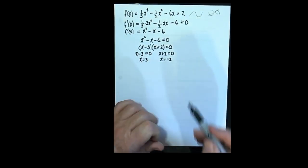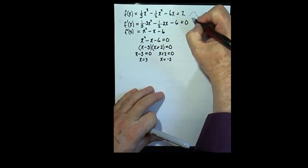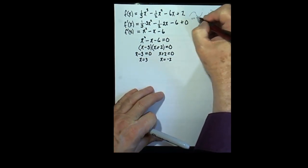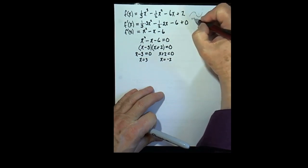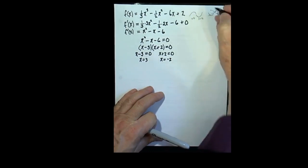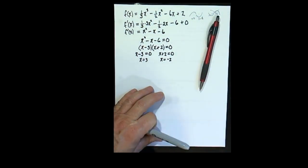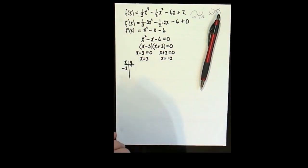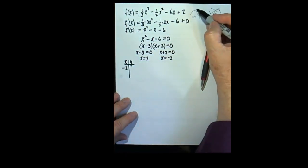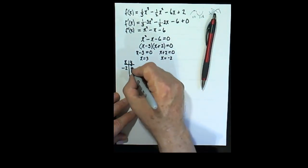What that means is that this high point is going to occur when x is equal to negative 2. And this low point is going to occur when x is equal to 3.